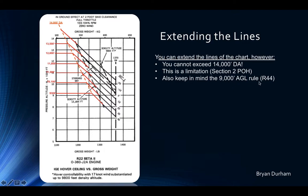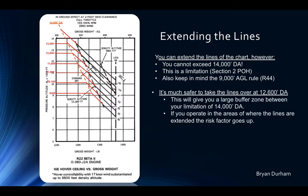For the R44, you also must keep in mind the 9,000-foot AGL altitude rule. You can extend lines up to 14,000 feet density altitude. If the R22 were limited to 15,000 feet, you could extend to 15, and so on. You can extend as high as you want, but eventually you will reach a limiting density altitude per Section 2 of the POH — and that's what students need to understand.